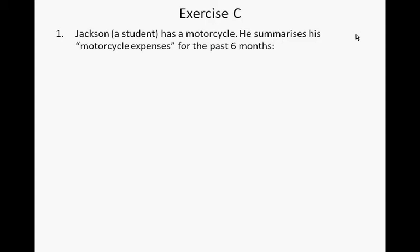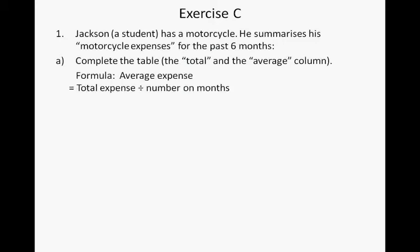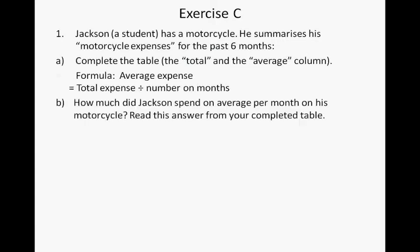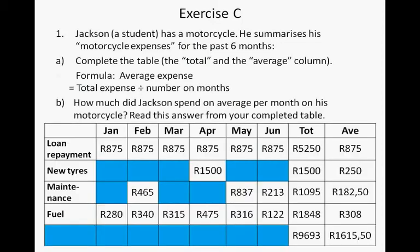Jackson is a student and he has a motorcycle. He summarizes his motorcycle expenses for the past six months. Complete the table — the total and the average column. The formula for average expenses is the total expense divided by the number of months. How much did Jackson spend on average per month on his motorcycle?